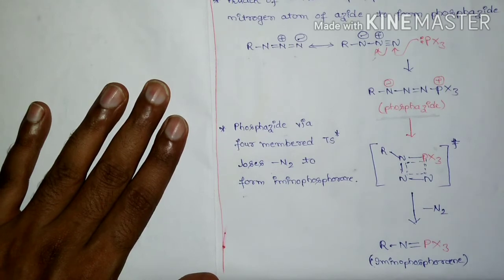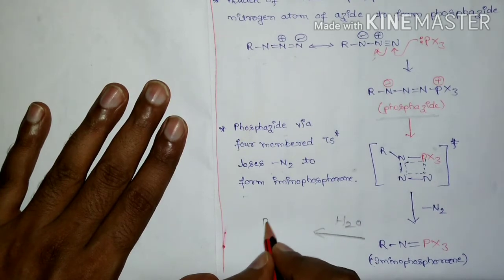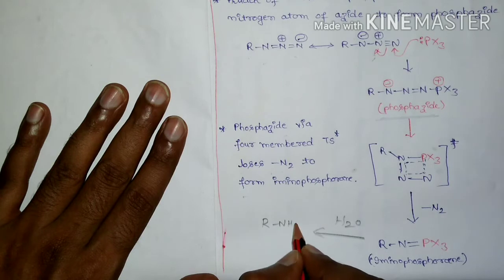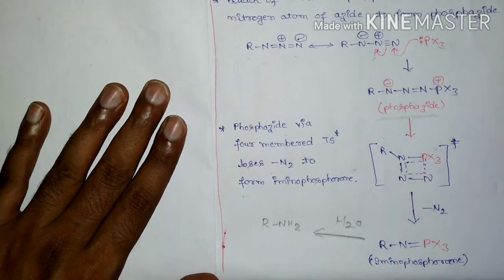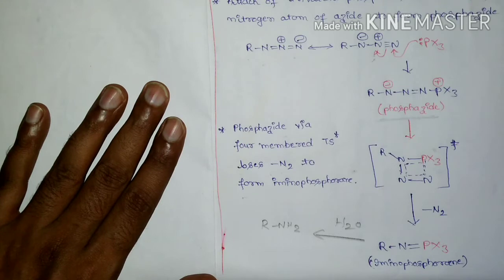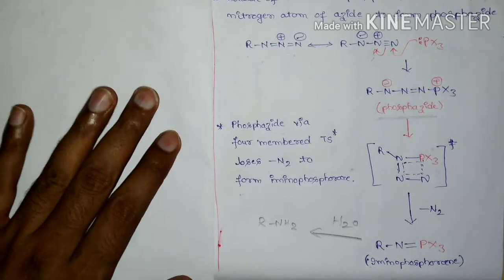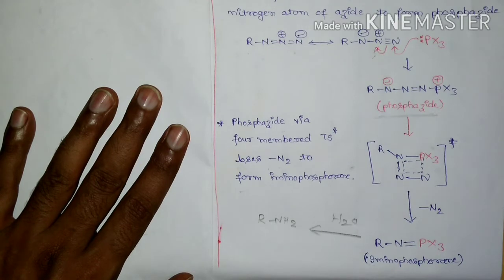Finally, this iminophosphorane undergoes hydrolysis in the presence of water to form the corresponding primary amine. This is the mechanism of the Staudinger reaction — a mild reduction of an organic azide to a primary amine using trialkyl or triaryl phosphine in the presence of water. This is the first named reaction.